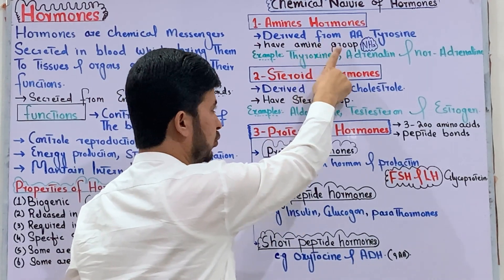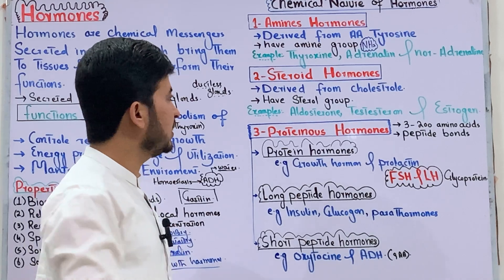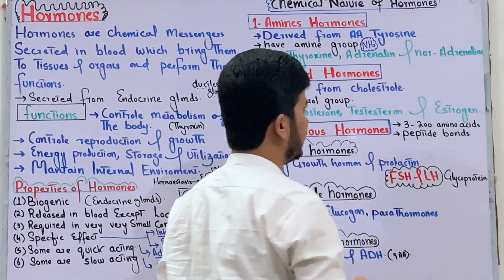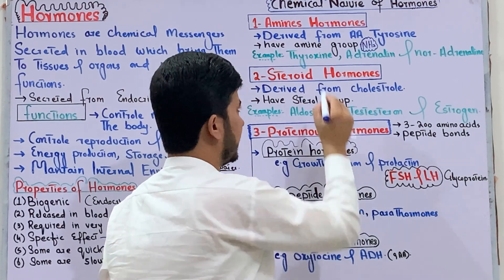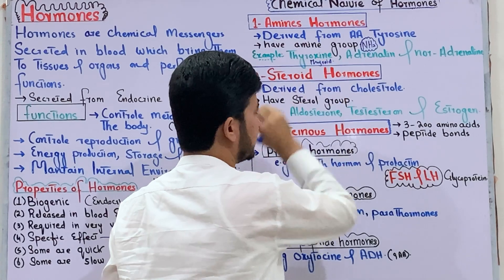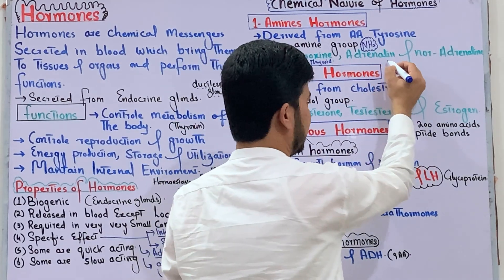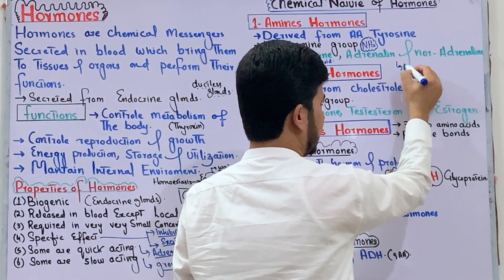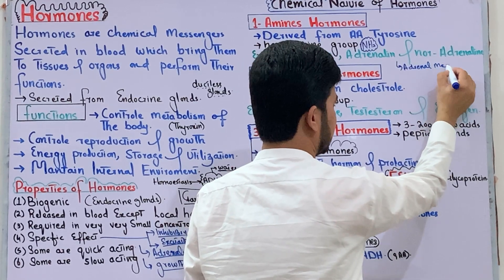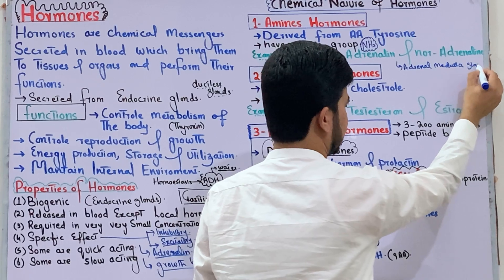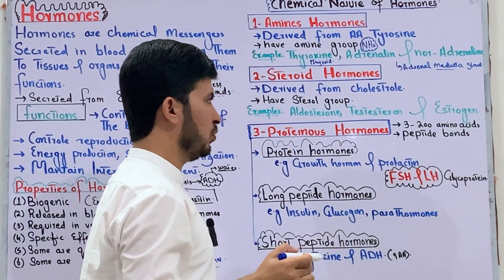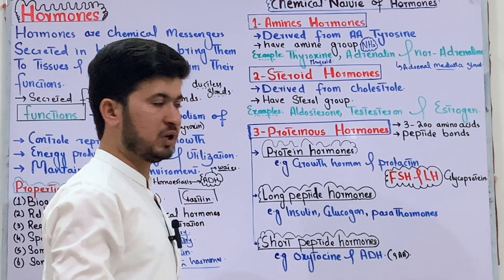In amino hormones, an amine group (NH2) is present. Examples are thyroxine, adrenaline, and noradrenaline. Thyroxine is released from the thyroid gland. Adrenaline and noradrenaline are secreted from the adrenal gland.